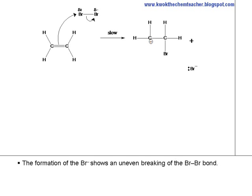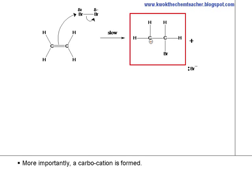The formation of the Br- shows an uneven breaking of the Br-Br single bond. More importantly, a carbocation is formed. This is the intermediate of this reaction.